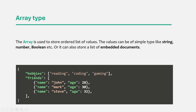For example, here we have this hobbies field which is storing an array of string values. Then we have this friends field which is also storing an array, but in this array we have a list of users — user objects. So an array is used to store a list of values. The values can be of simple types like string, number, boolean, etc., or it can also be a list of embedded documents.